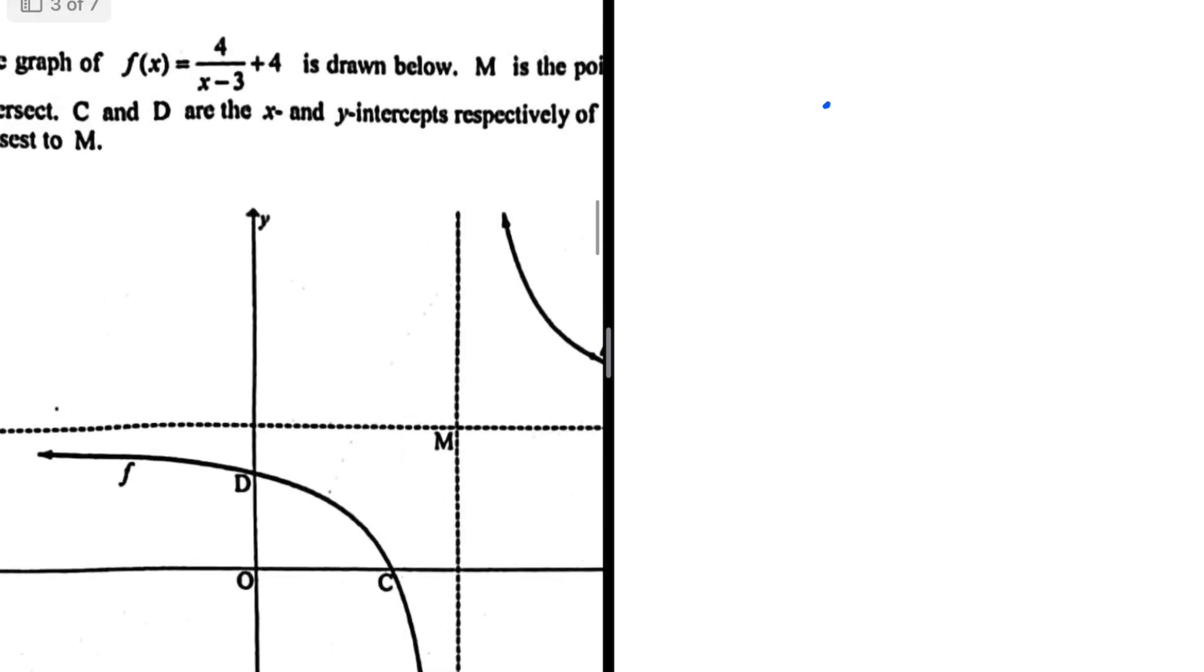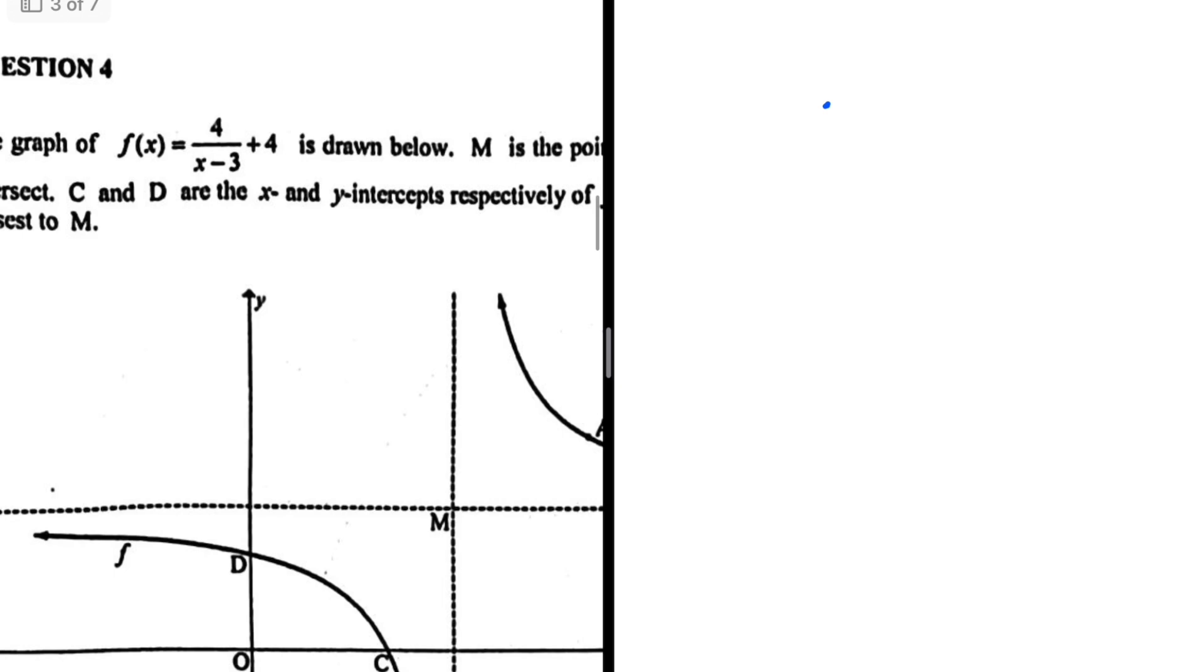And we can clearly see that f(x) equals 4 divided by x minus 3 plus 4. We know that we have one asymptote at x minus 3 equals 0, where x is clearly equals to 3.